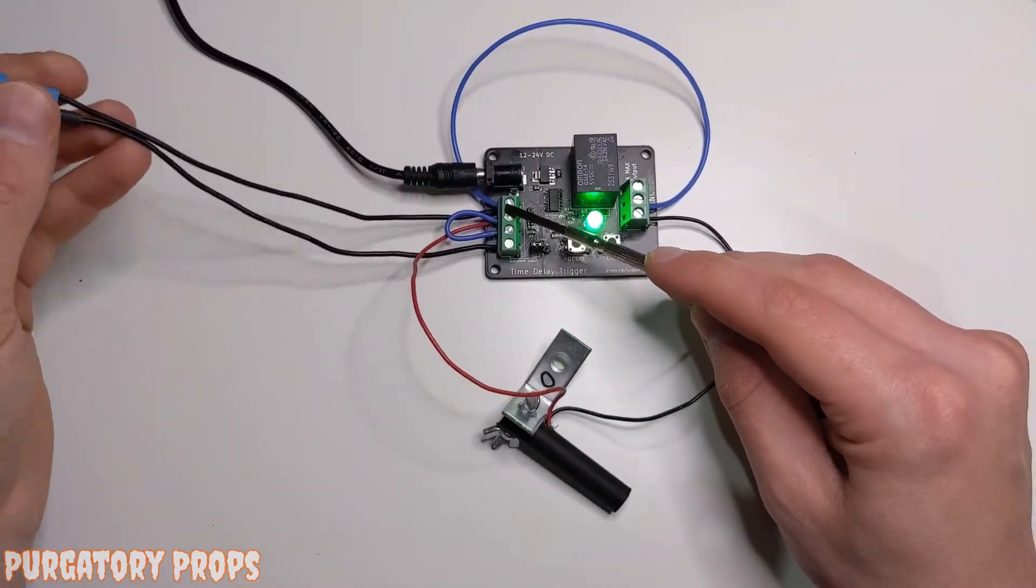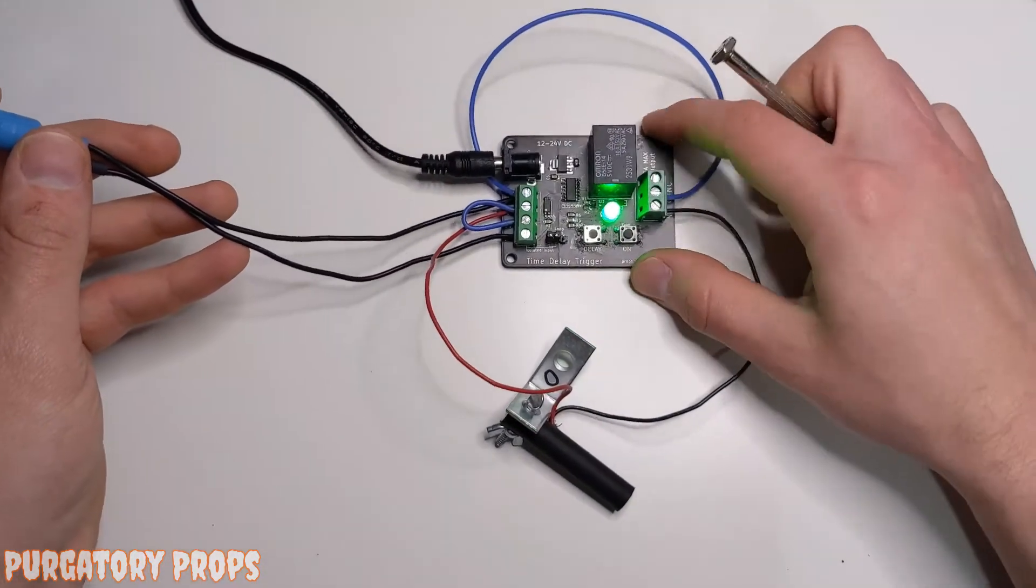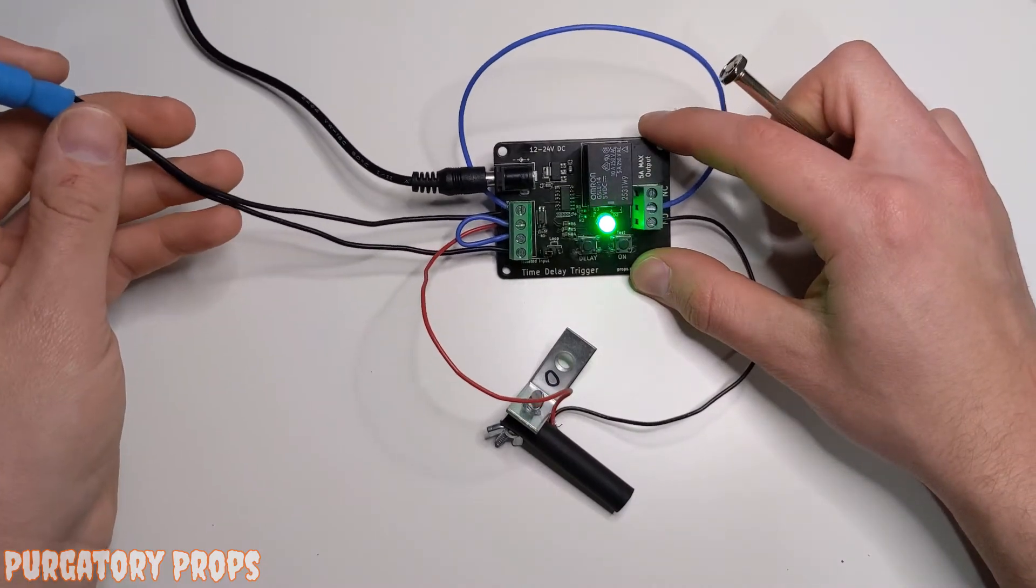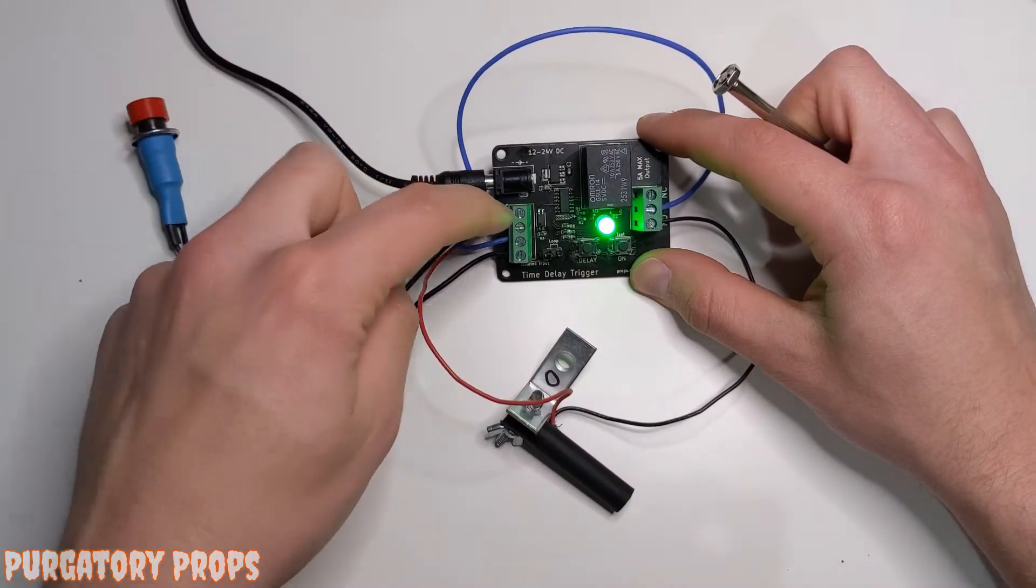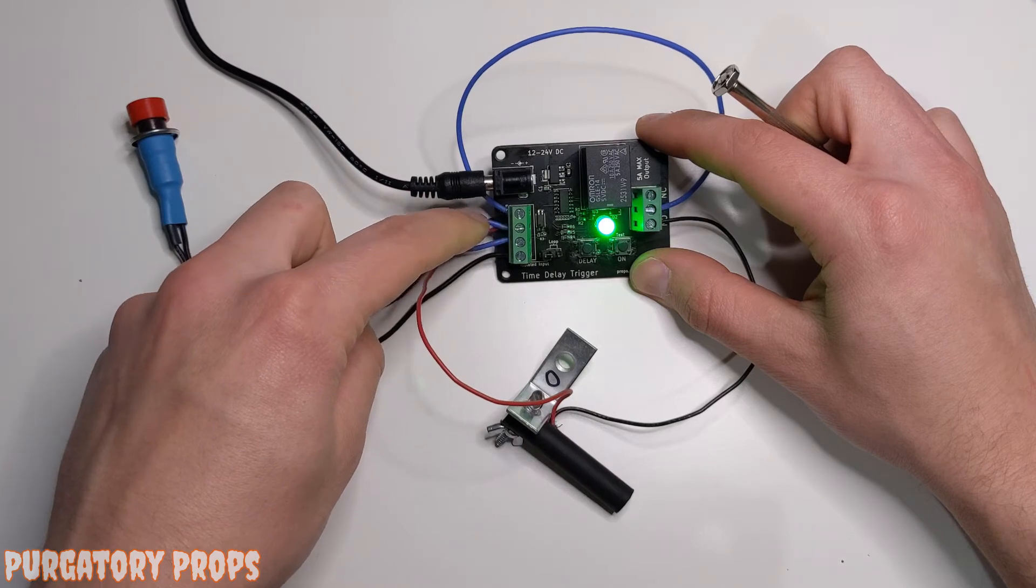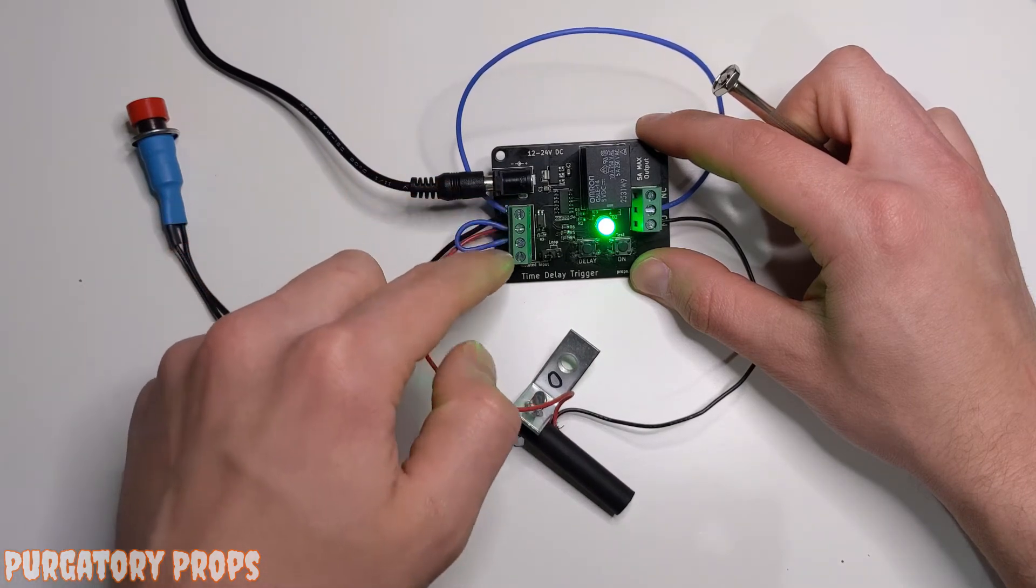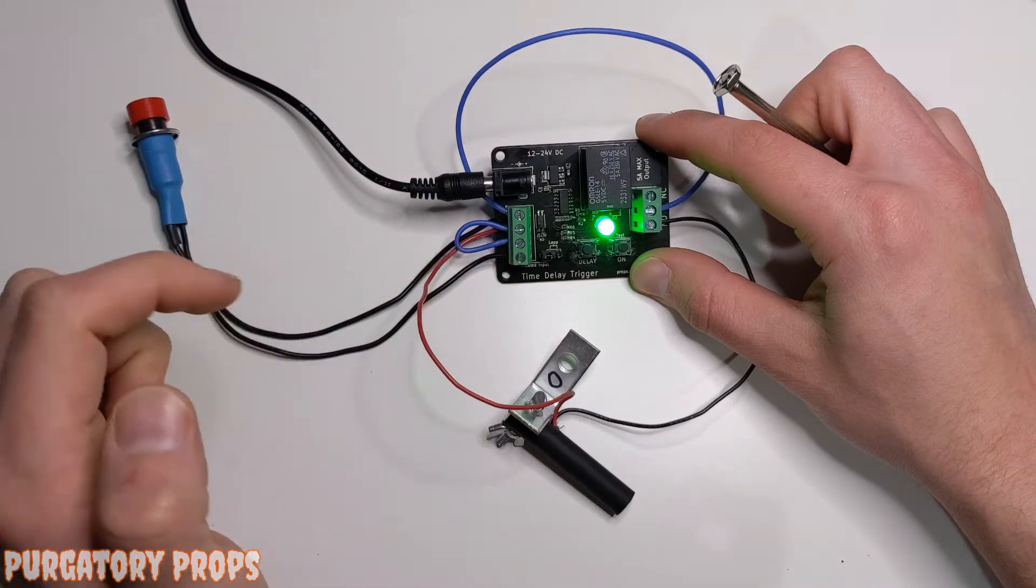So through our button we have that connected to the negative terminal. When we push this, since C is jumpered to the positive, we'll have 12 volts connected to input 1.